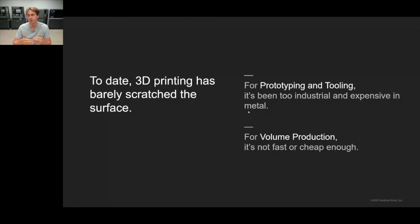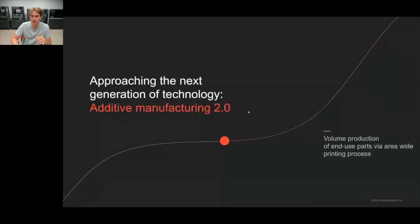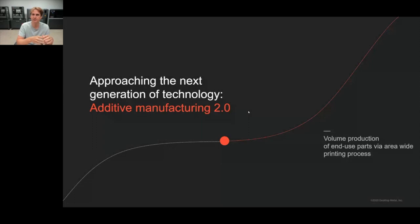When it comes to actual volume production — producing hundreds or thousands of parts per week or per month — it's really just not fast or cheap enough. We feel the additive manufacturing industry is at an inflection point: Additive Manufacturing 2.0, where we're justifying volume production of end-use parts via area-wide printing processes, transitioning from low-volume, very high part costs to very high-volume production with much lower part costs.